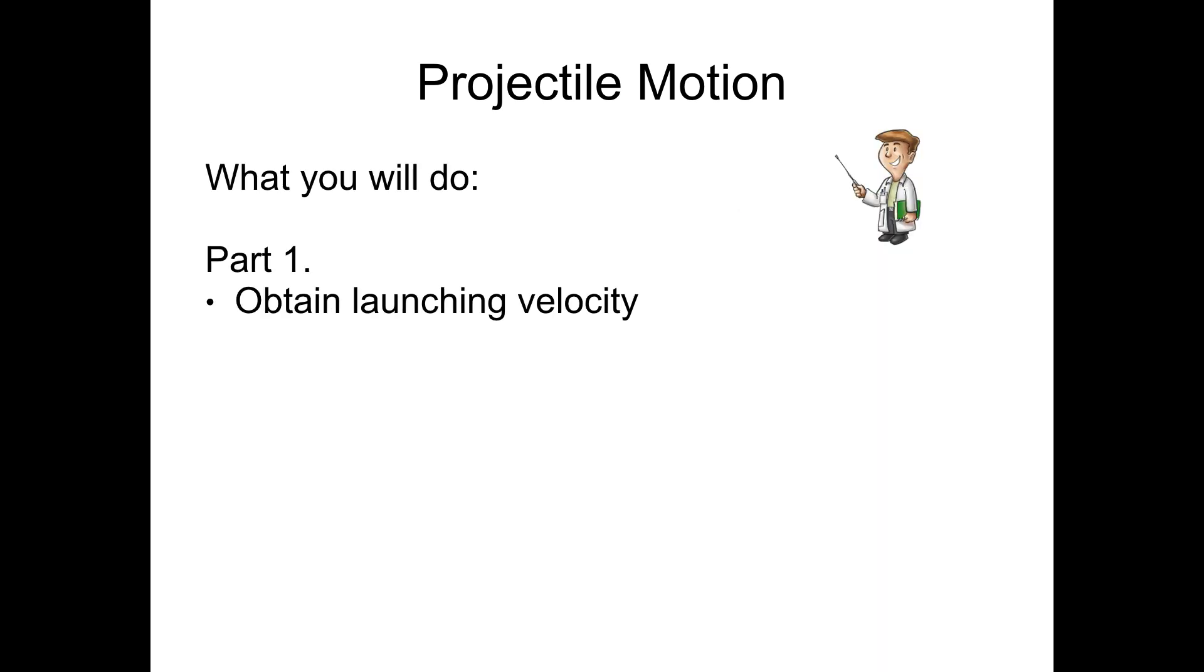So what you will actually do in the lab: part one, you'll be obtaining the launching velocity from dropping your ball at a specific height. I'll show you in a minute how to do this in the lab. You're going to be using that in the second part to calculate the trajectory from launching the ball from that same height but over a different distance, and you'll be aiming to land the ball in the cup. I'll show you what I mean now in the lab and we'll come back to some hints.